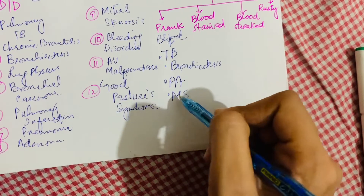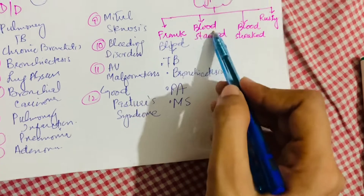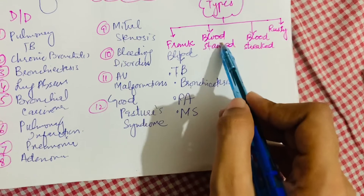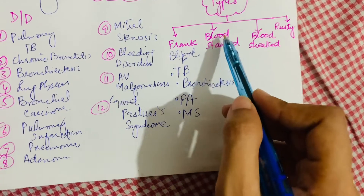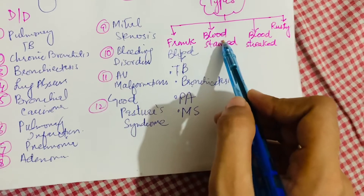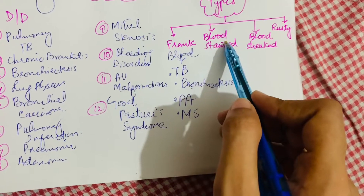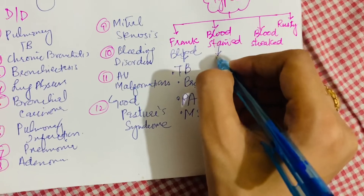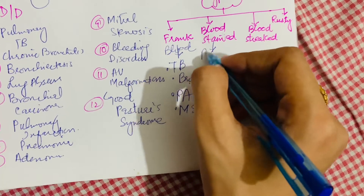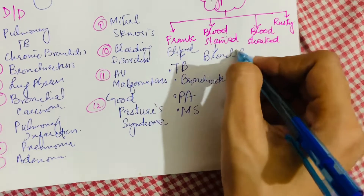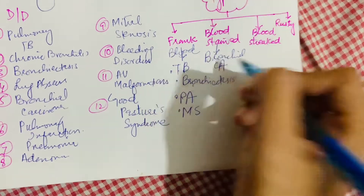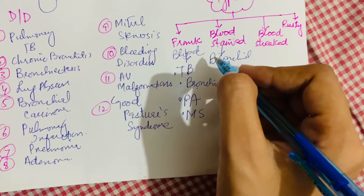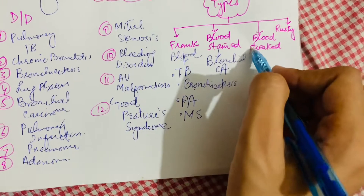The second type of hemoptysis is blood-stained sputum. In this type, blood and sputum are mixed in various proportions, and it most commonly occurs in bronchial carcinoma.